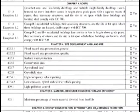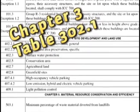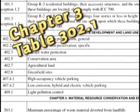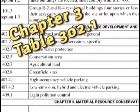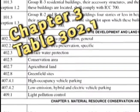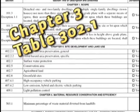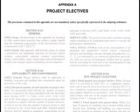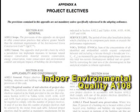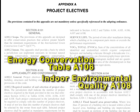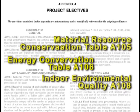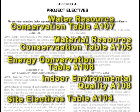An innovation in this code is contained in Chapter 3, which features 20 optional jurisdictional requirements that allow a jurisdiction to customize their code at the level they wish to achieve if they want to go beyond the baseline objectives of the IGCC. In addition, where Appendix A is adopted, 39 project electives are available that allow project designers flexibility while simultaneously encouraging and recognizing building performance that exceeds the minimum requirements in the body of the IGCC.